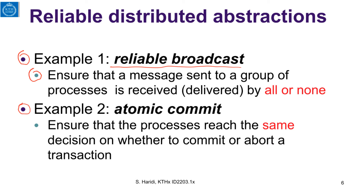Another type of distributed abstraction is atomic commit, which is a form of agreement between a set of processes. We want to ensure that all the processes will reach the same decision on whether to commit a database transaction or to abort a transaction.